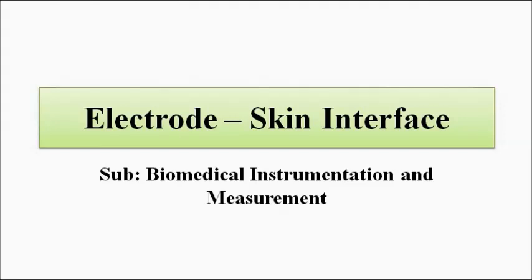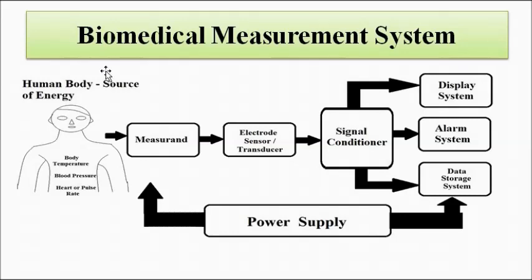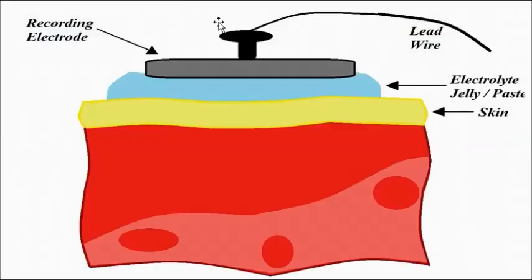In a biomedical measurement system, for the measurement of any physiological parameter — be it body temperature, blood pressure, heart rate, pulse rate, electrocardiogram, electromyogram, or electroencephalogram — we have to use an electrode. The sensor or transducer is associated with the electrode; it is connected to the specific body part, either placed on the surface or inserted into the body. So it comes in contact with the skin, and that gives rise to the electrode skin interface.